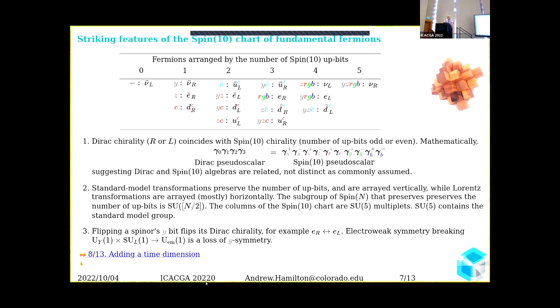Wilczek didn't notice this, maybe because he didn't write it down in the right way. If you write down all the spinors in a table organized by the number of up bits, you get this table. The first column is zero up bits, then one up bit, two up bits, three, four, five up bits. You can see various familiar things: a neutrino, the electron, up and down quarks complete with various colors in the case of quarks.